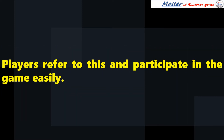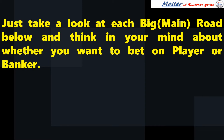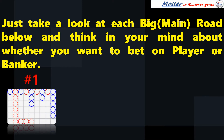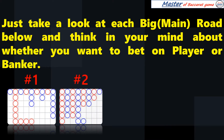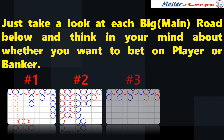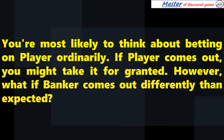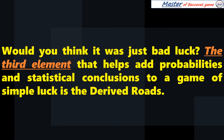Players refer to this and participate in the game easily. Just take a look at each big main road below and think about whether you want to bet on player or banker. You're most likely to think about betting on player ordinarily. If player comes out, you might take it for granted. However, what if banker comes out differently than expected? Would you think it was just bad luck?